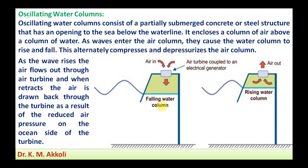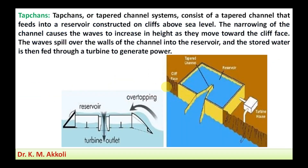The rise and fall of the water column alternately compresses and decompresses the air column. As the wave rises, air flows out through the air turbine. When the wave retracts, air is drawn back through the turbine due to reduced air pressure on the ocean side. This airflow through the turbine generates electricity — that is the oscillating water column principle.